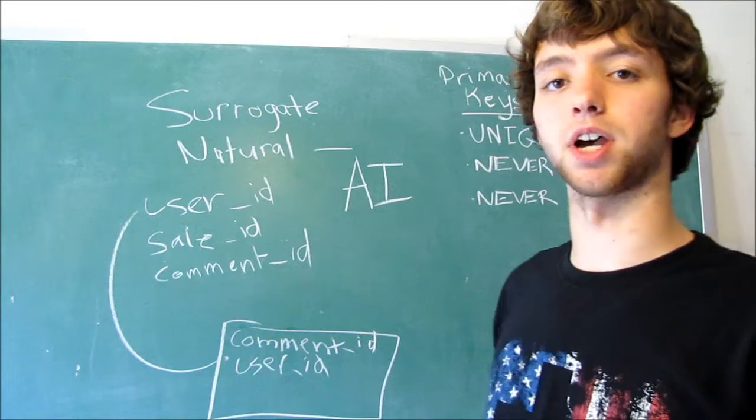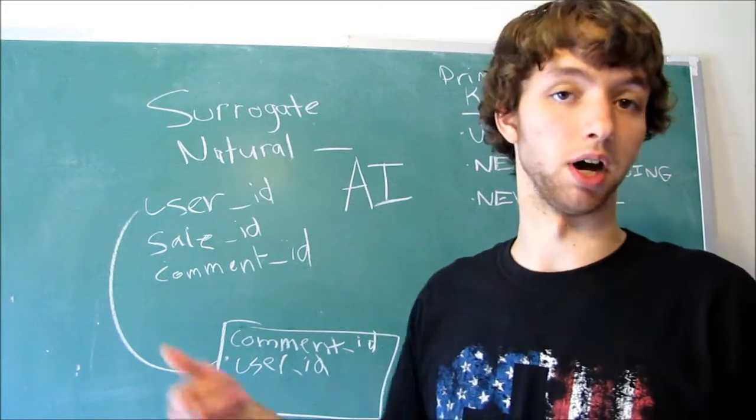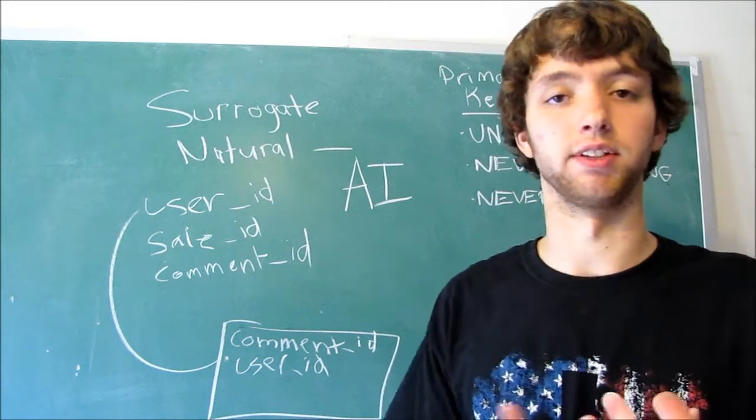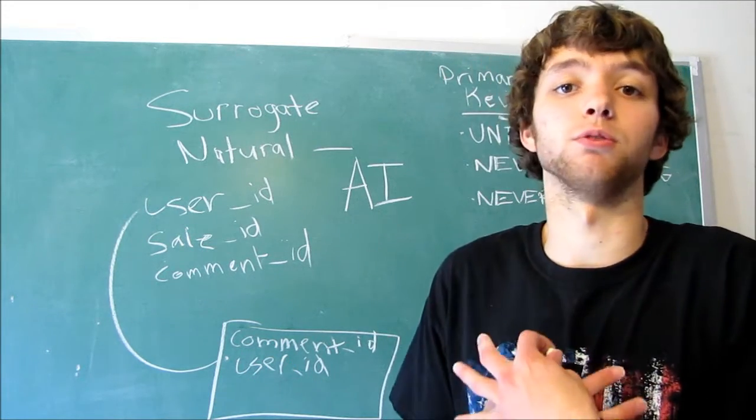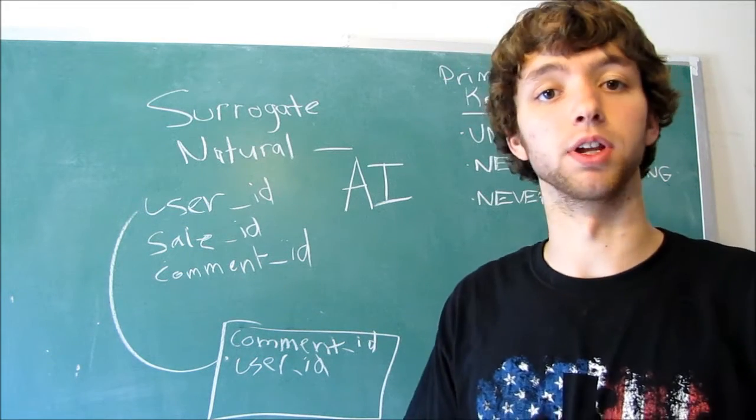The ID is just a big number that has a feature known as auto-increment. That means every single time you make a new row within this table, it's going to raise the ID by 1. Then, when you delete columns or something, and you have gaps within your numbers, it doesn't really matter because the number has no real-world significance.